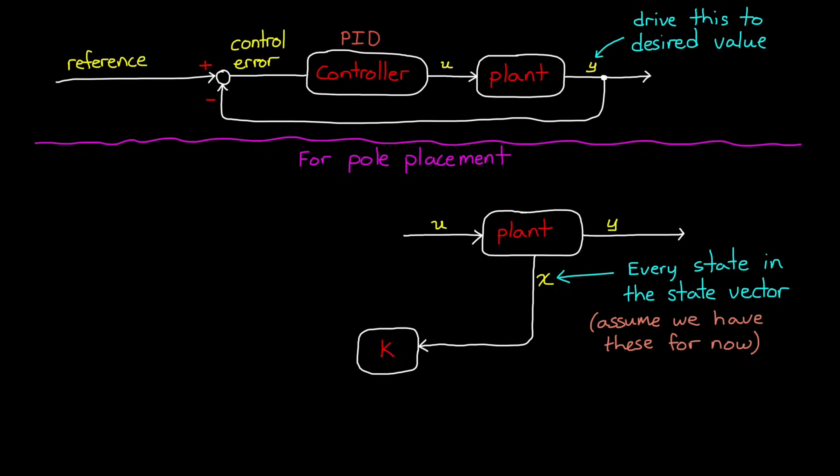We then take the state vector and multiply it by a matrix that is made up of a bunch of different gain values. And the result is subtracted from a scaled reference signal. And this result is fed directly into our plant as the input. Now, you'll notice that there isn't a block here labeled controller, like we have in the top block diagram.